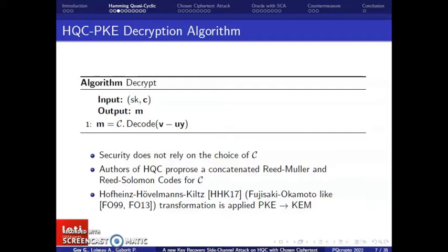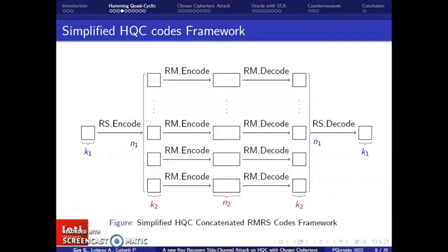This error allows to mask the message. U and V are transmitted for the decryption. The decryption algorithm only consists in decoding the incoming message. This is done with the secret key Y, which is the only part used in HQC. Given that the code C and the decoder of C are publicly known, the security of HQC does not rely on the choice of the error correcting code C. In the last version of HQC, authors choose to instantiate this code with a concatenated Reed-Muller and Reed-Solomon codes.